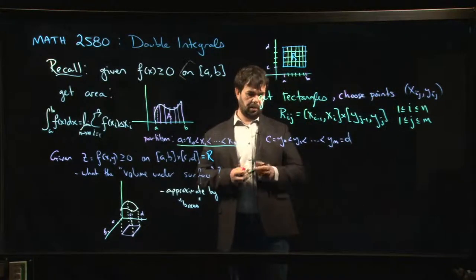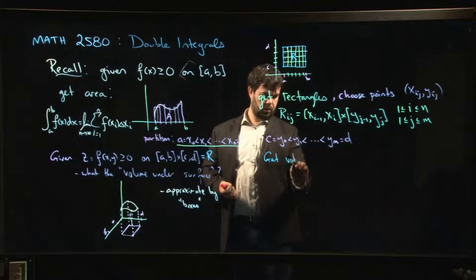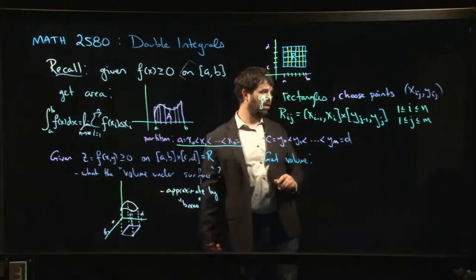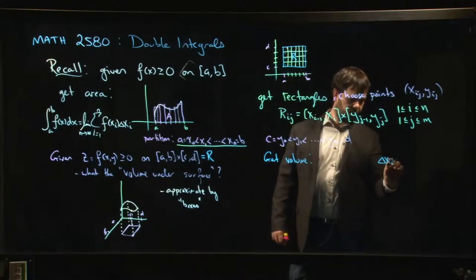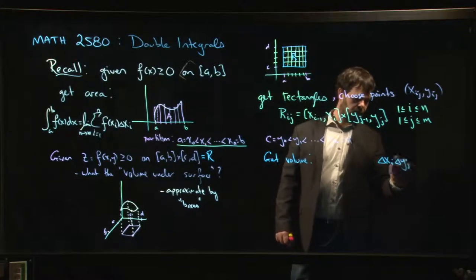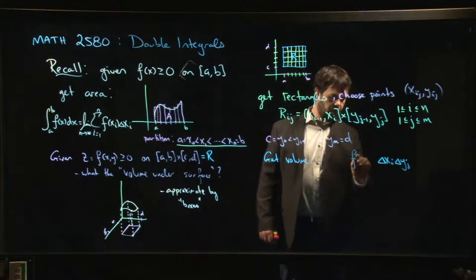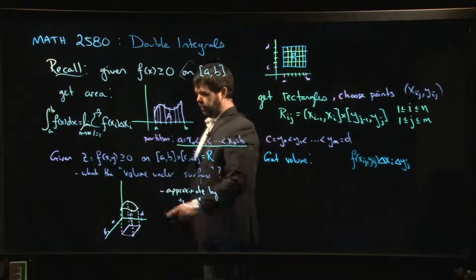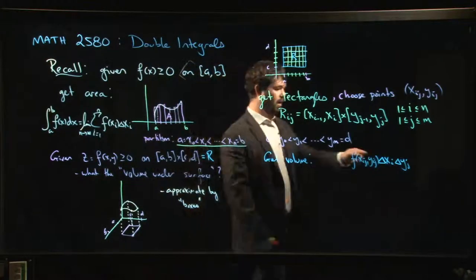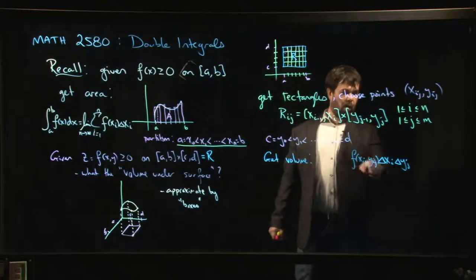And so we get boxes with volumes like this. So we get a volume that looks something like this. Well, we take the area of the base. So the area of the base, which is going to be delta xi times delta yj, the length of this interval times the length of that interval. And now we multiply by the height. So we take our point, we plug it into our function. That gives me the z-coordinates. So now I've got my x times y times z. That's the volume of my box. But this is one box.